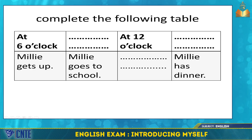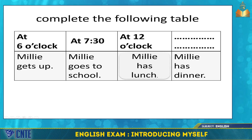Our second task is to complete the following table. Some of the information is missing, so you have to carefully read the text to complete it. The first part is done for you: at 6 o'clock, Millie gets up. Then, when does Millie go to school? At 7:30. At 12 o'clock, what does Millie do? Millie has lunch, because midday means 12 o'clock. Finally, when does Millie have dinner? At 8 o'clock.